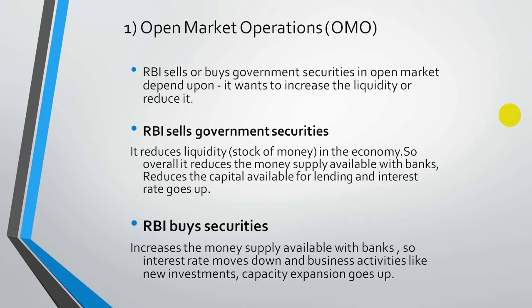When RBI sells securities, the interest rate goes high, people ask for fewer loans, manufacturers can't fund large-scale production, and demand reduces — ultimately reducing the cash supply in the economy. When RBI buys securities, this increases the money supply in the hands of banks, so interest rates move down and more business activities take place.